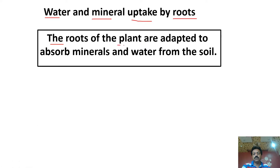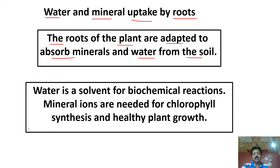The roots of the plant are adapted to absorb minerals and water from the soil. Why do you need water for plants? Because water is a universal solvent for all the biochemical reactions which are taking place in the soil.